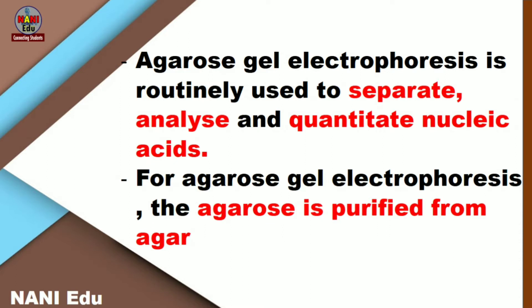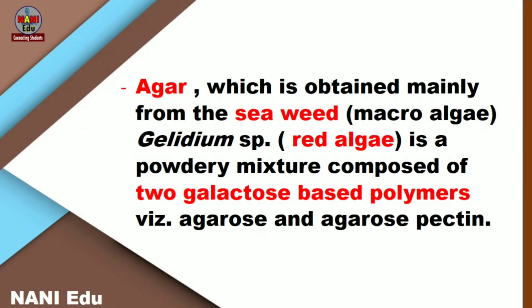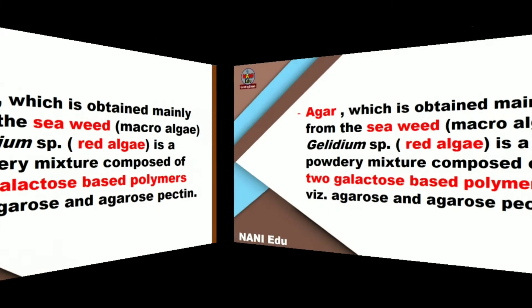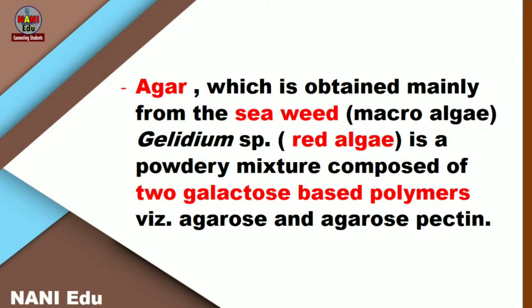So what is agarose? It is a purified form of agar-agar — a pure form. It is obtained from seaweed, specifically macro algae, particularly from red algae. We can say it is a Gelidium species. It contains two galactose-based polymers. Agarose is a polymer. There are different types of algae — brown algae, green algae — but agar-agar content is present more in red algae, along the Gelidium species, which has high concentrations. That is why we select the Gelidium species.